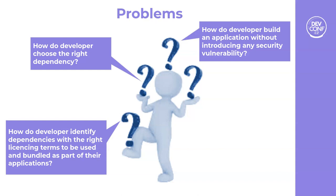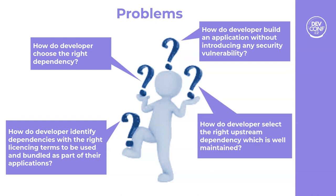The last problem is that many packages are available for the same purpose — for example, JSON parsing. There are many packages available for JSON parsing. Out of all of them, which one is well-maintained, properly upgraded, or has a large number of contributors? How does a developer know that?